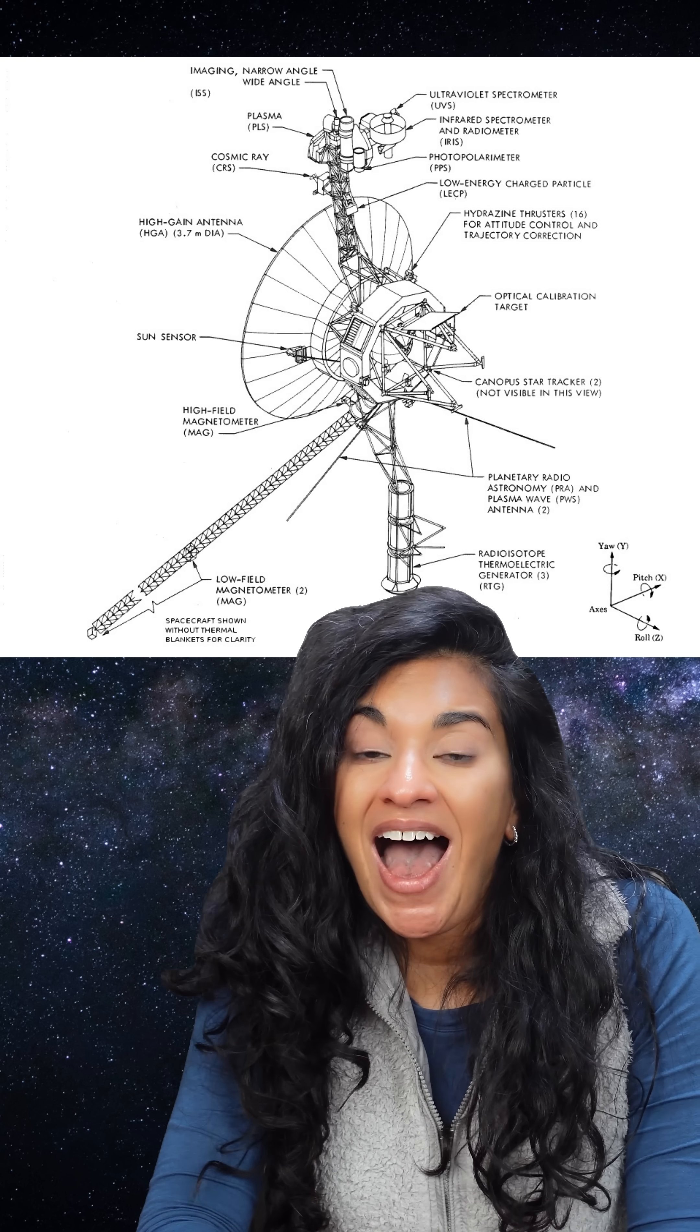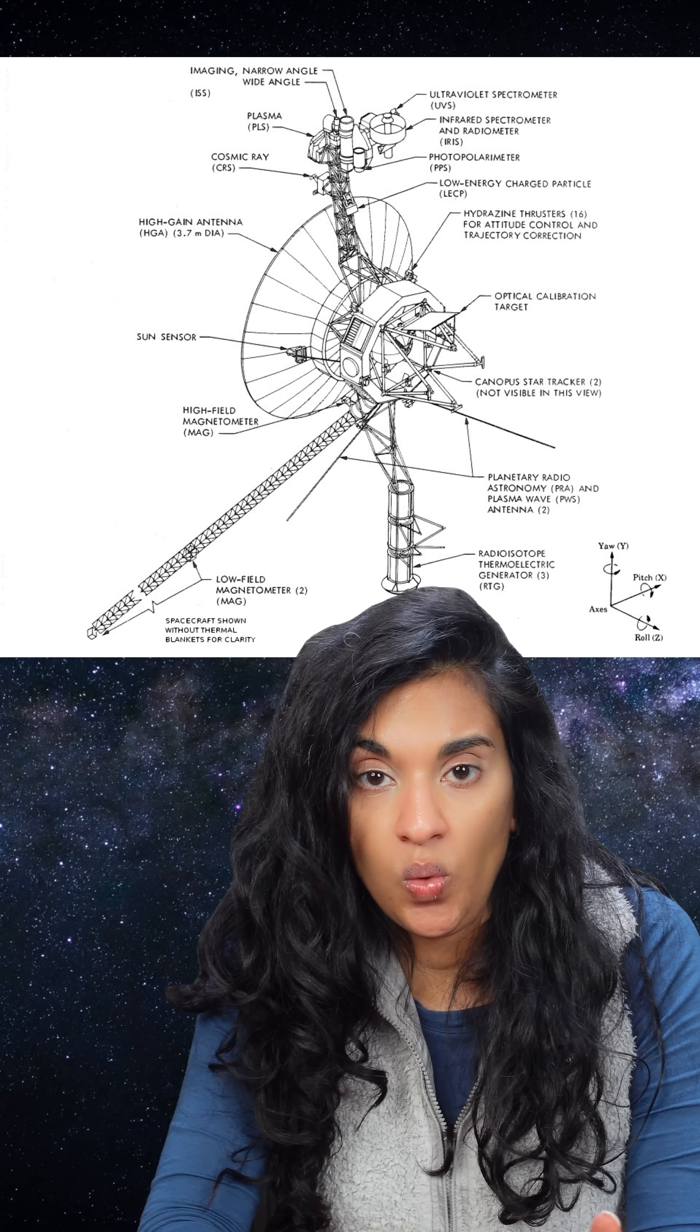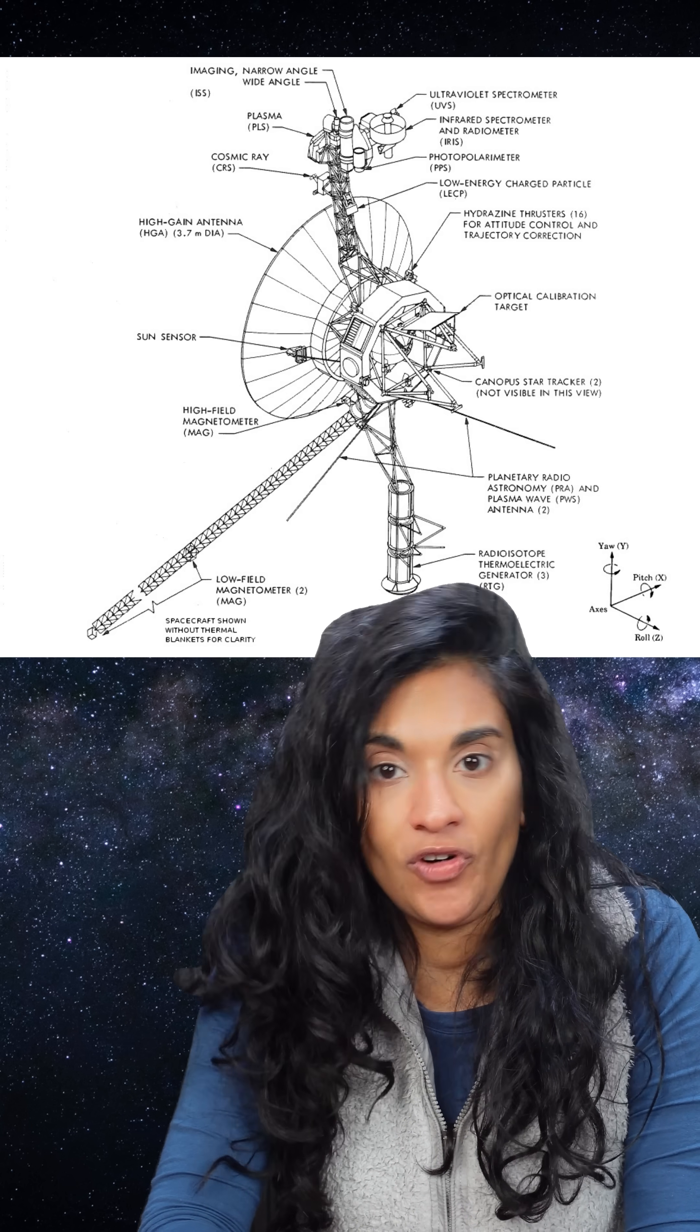That means engineers at NASA's JPL had to figure out what was wrong with Voyager 1 and fix the problem without any data from the spacecraft.